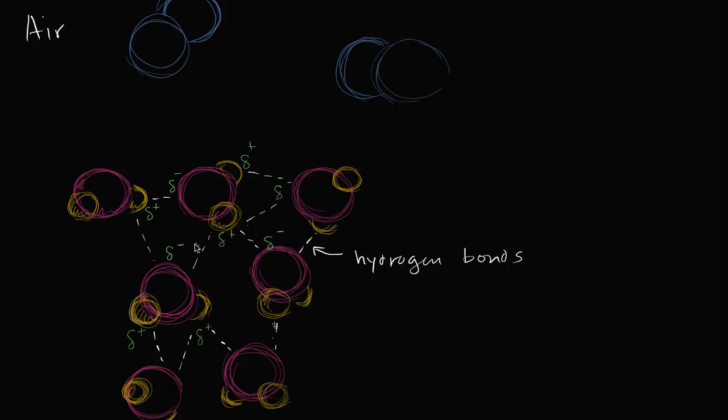Now what I want to think about is the surface in particular. And if you look at the surface of water, it might look completely smooth. But if you were to zoom in on a molecular level, you'll see that it's just made up of these molecules. But roughly speaking, let's just say that this is roughly the surface of the water. Now what's going on at the surface?